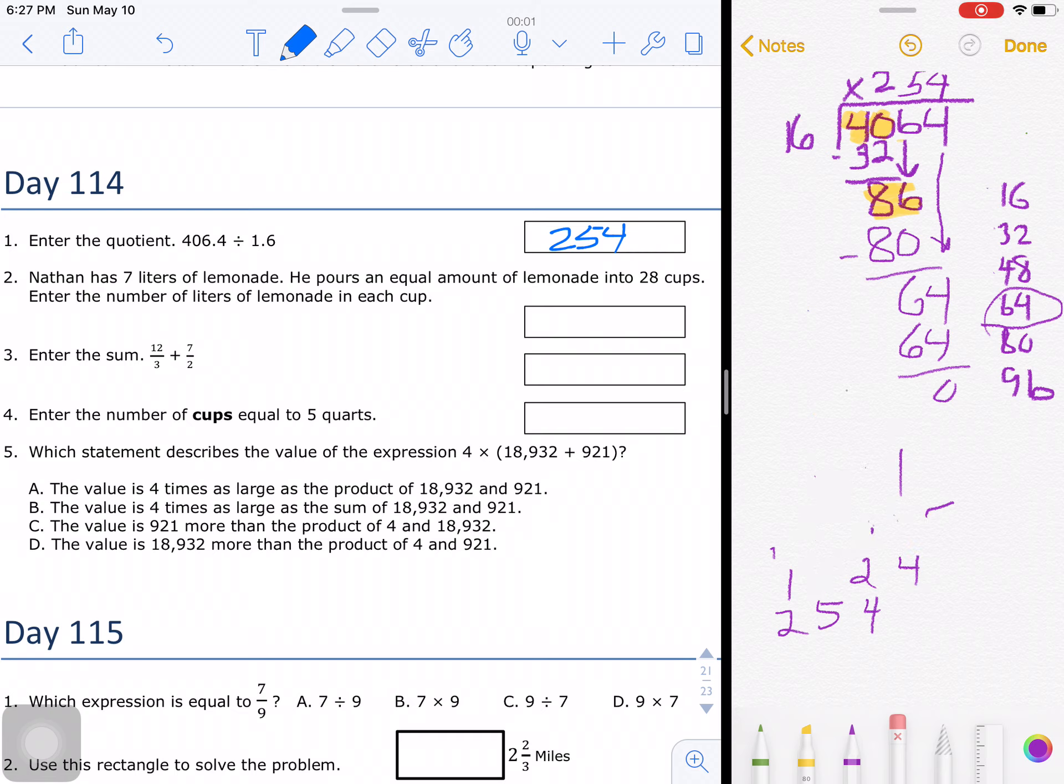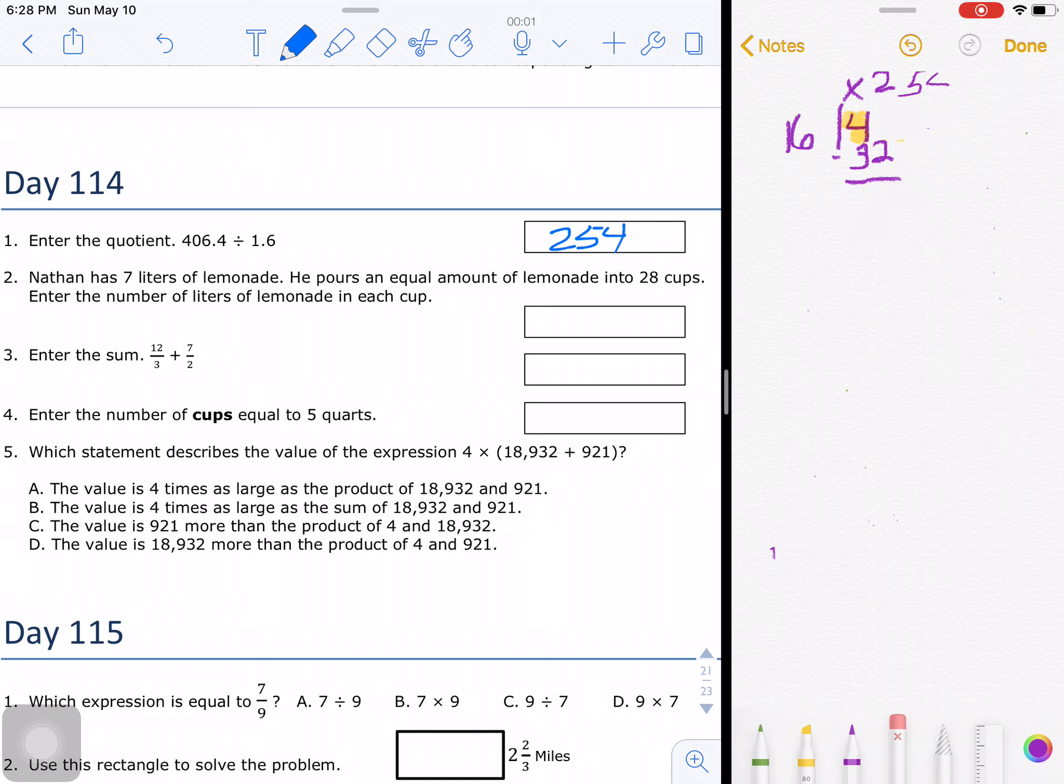All right, number 2. Nathan has 7 liters of lemonade. He pours an equal amount of lemonade into 28 cups. Enter the number of liters of lemonade in each cup. What are we starting with? What is our whole? That is 7. And we're dividing that whole into 28 parts. Remember how we can express that: 7/28.